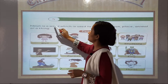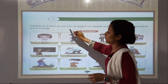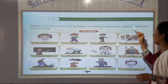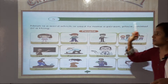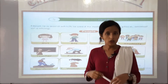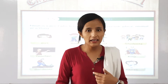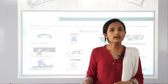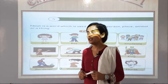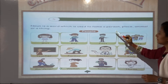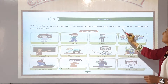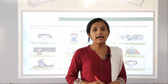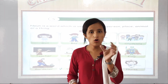Noun is a word which is used to name a person, place, animals, or a thing. Those who have their name, we can call that a noun. Like those who have names — person, place, animals, or a thing — they all have their own names.